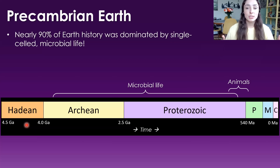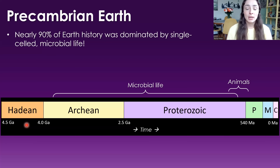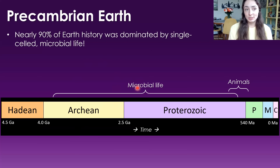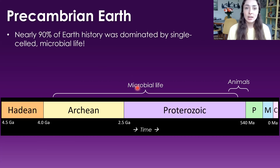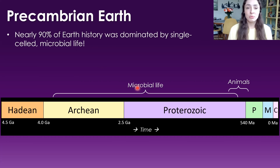Just to set the stage in terms of geological history, or the lifetime of Earth, most of Earth's history — around 90% of it — was dominated by microbial life. That is, tiny, single-celled organisms that were not by any means animals or plants or anything large that we see with the naked eye today. So honestly, the world that we know — the songbirds, the trees, the grass — is only a very recent world in terms of Earth's entire history.